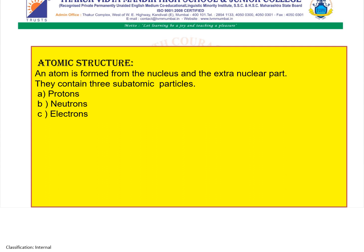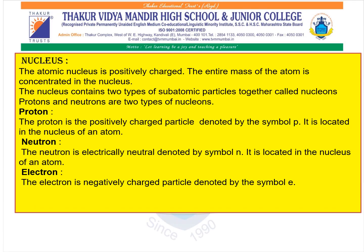An atom is the smallest particle of an element. This atom contains three subatomic particles: protons, neutrons, and electrons. The nucleus is present at the center of the atom. This nucleus is positively charged because it consists of two subatomic particles — protons and neutrons — which are also referred to as nucleons.